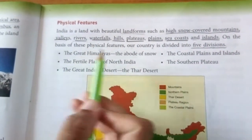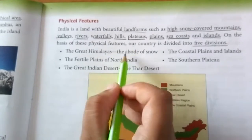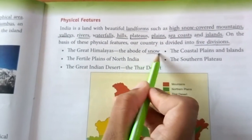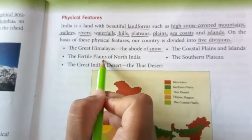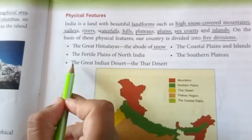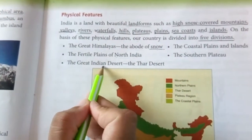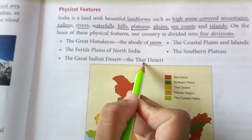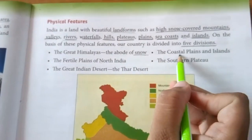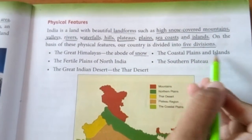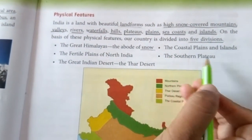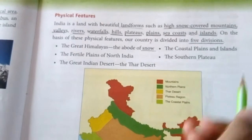The first one is the Great Himalayas, the abode of snow. The second is the fertile plains of North India. The third is the Great Indian Desert, that is the Thar Desert. The fourth is the coastal plains and islands. The fifth is the southern plateau.